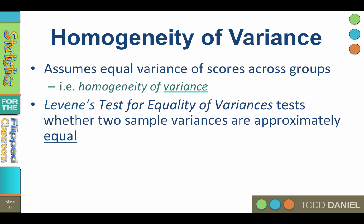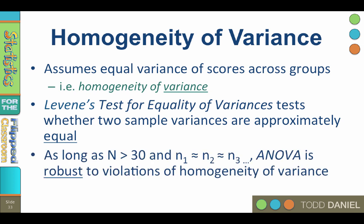However, as long as your sample sizes are greater than 30 and the groups have essentially the same number of people in each one, in other words N₁ = N₂ = N₃, then ANOVA is robust to violations of homogeneity of variance. Robust means that the type 1 error rate does not increase if the assumptions are violated.